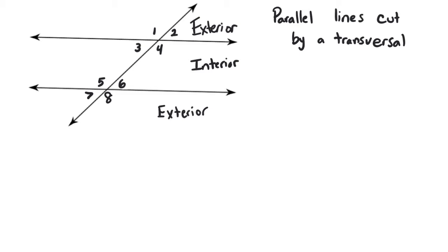The other thing we need to talk about is our transversal. If two angles are on the same side of the transversal — like six and four, or eight and two — any angles on the same side of the transversal are known as same side angles, or consecutive angles. If they're on opposite sides of the transversal, then those are alternate angles.